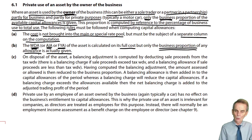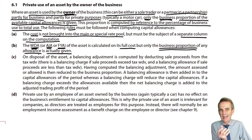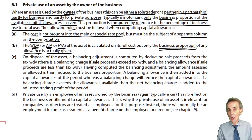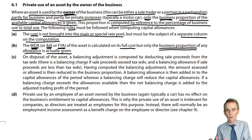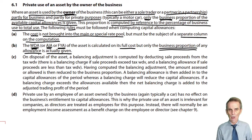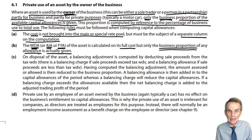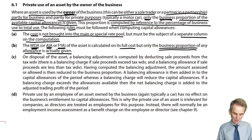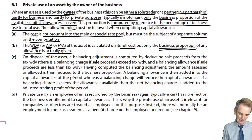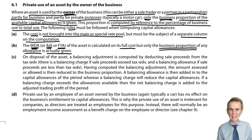We compute what is the relevant allowance — let's assume we're talking about a car with CO2 emissions, we'll take 18% or 6% whichever is relevant based upon those emissions — but then the bit of that allowance that can actually be claimed is restricted to the business use proportion. Let's have a little example to illustrate that.